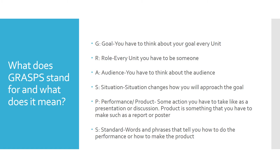P stands for performance or product. Performance is some action you have to take, like a presentation or discussion. Product is something that you have to make, such as a report or poster. S means standard — words and phrases that tell you how to do the performance or how to make the product.